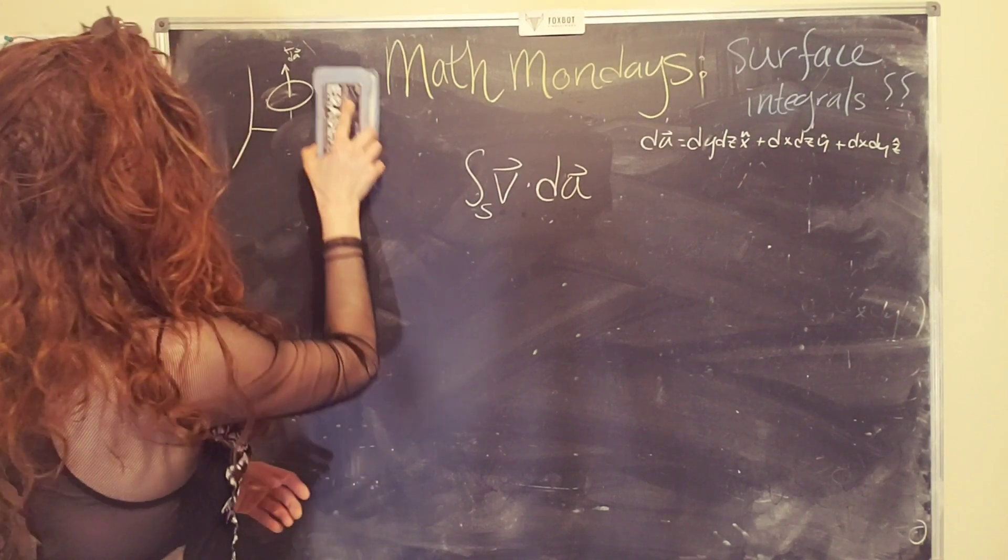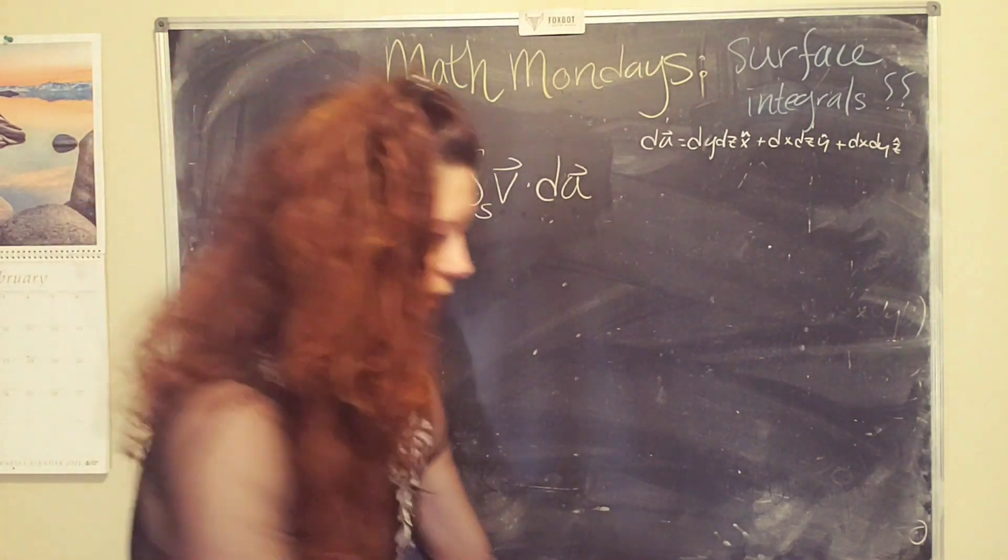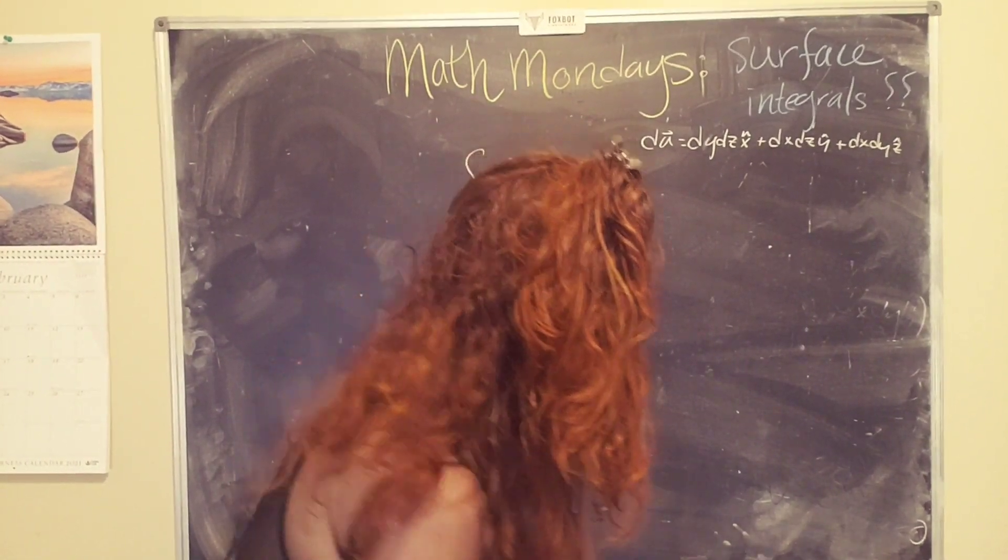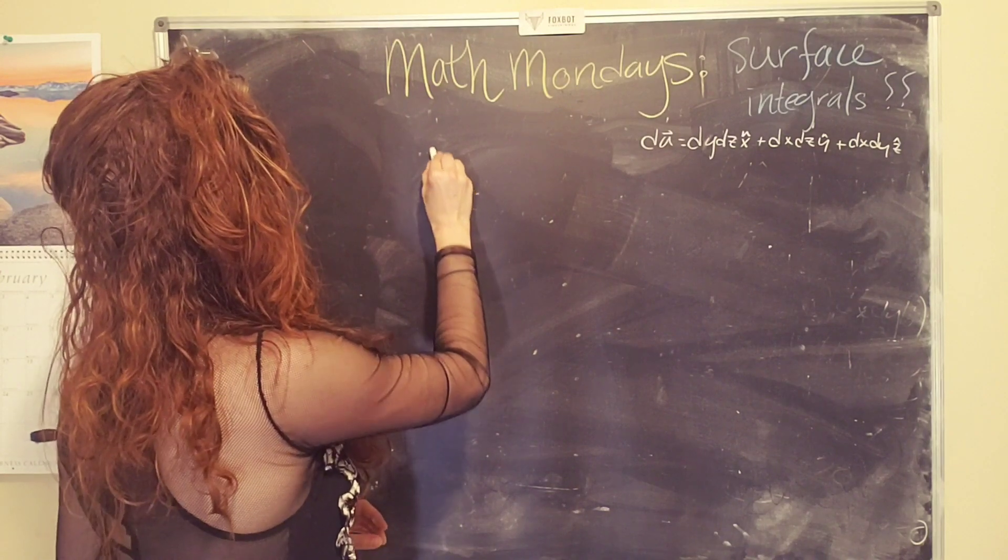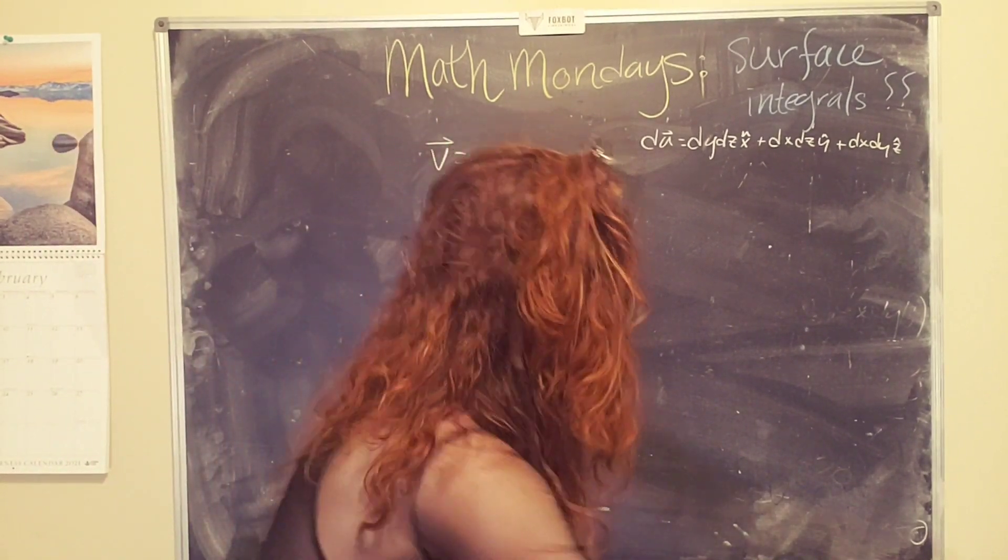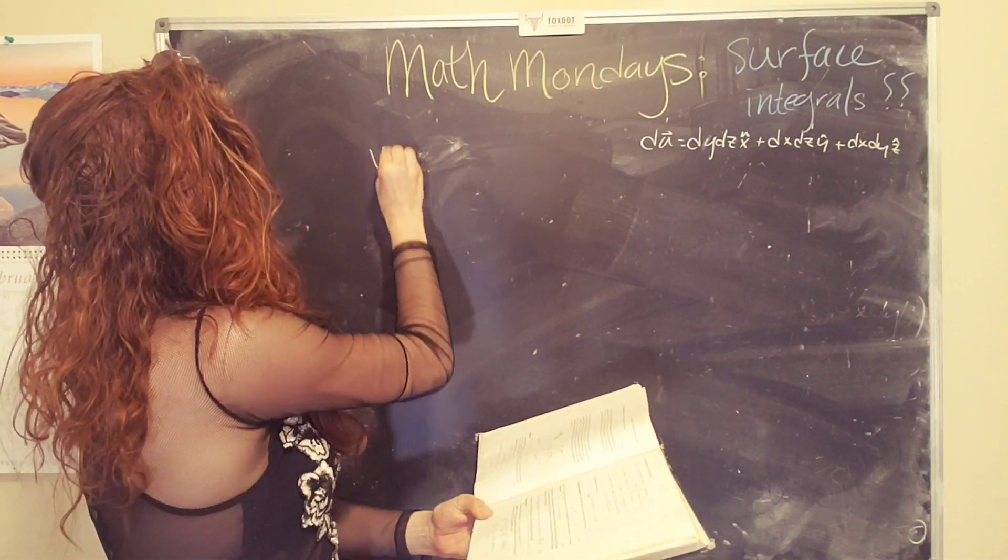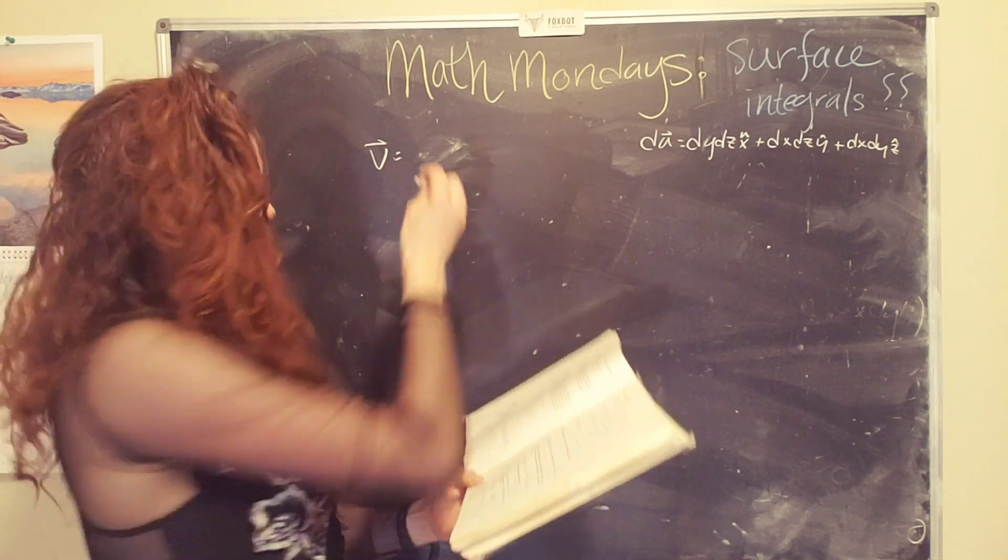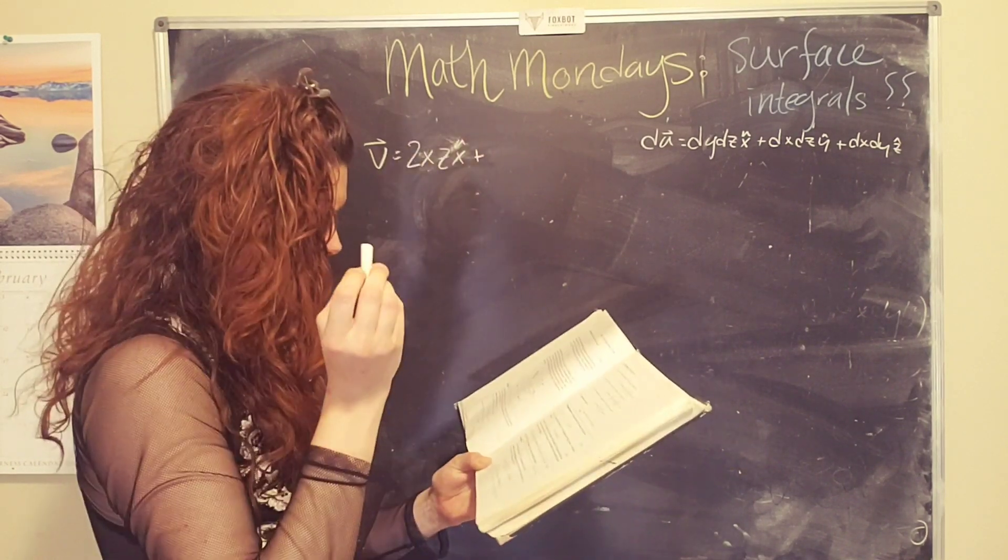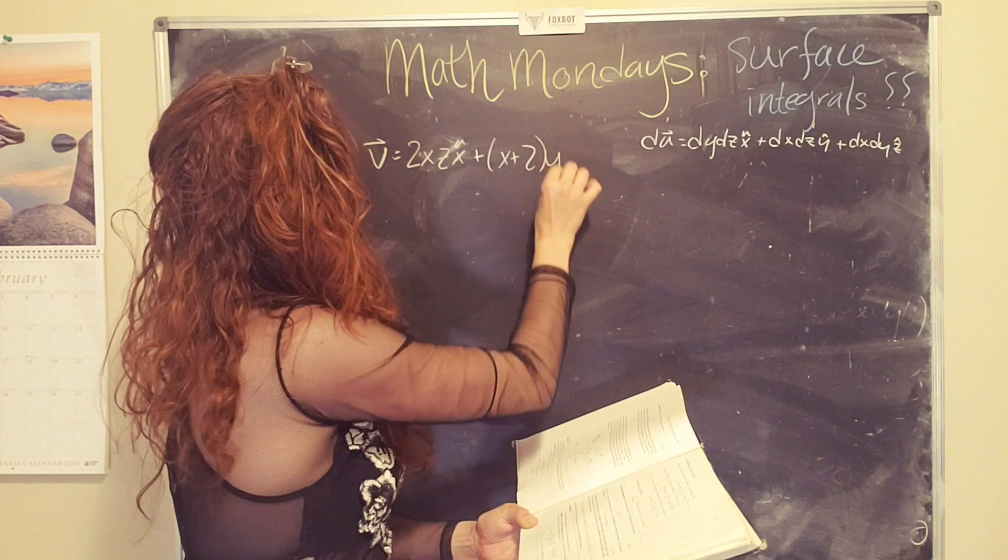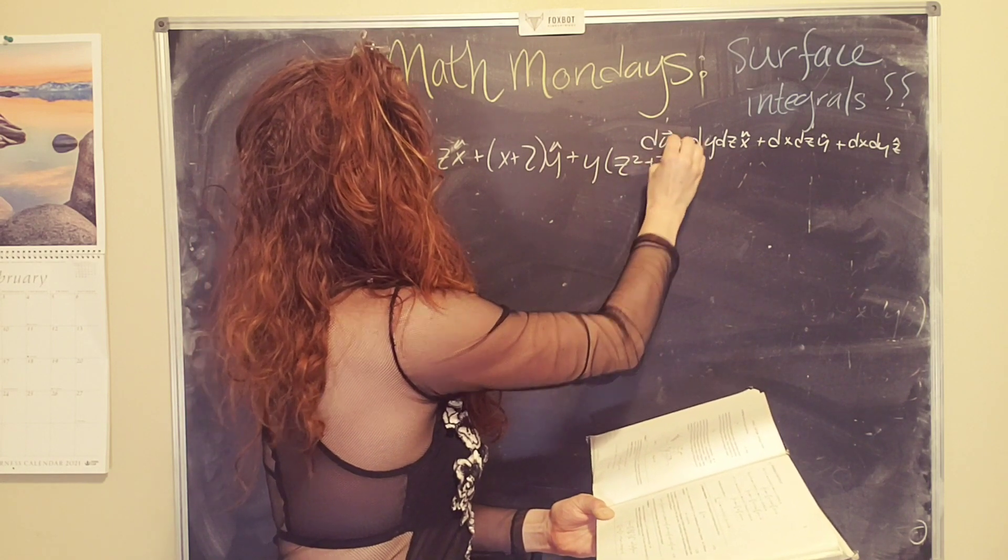So now that we have talked a little bit about what a surface integral is and what it allows us to calculate, let's do an example. Okay. So, let's say that we have, oops, I'm going to give myself more space up here. Okay. So let's say we have a vector v, which I didn't memorize this one. So I'm going to look at the book for the equation.